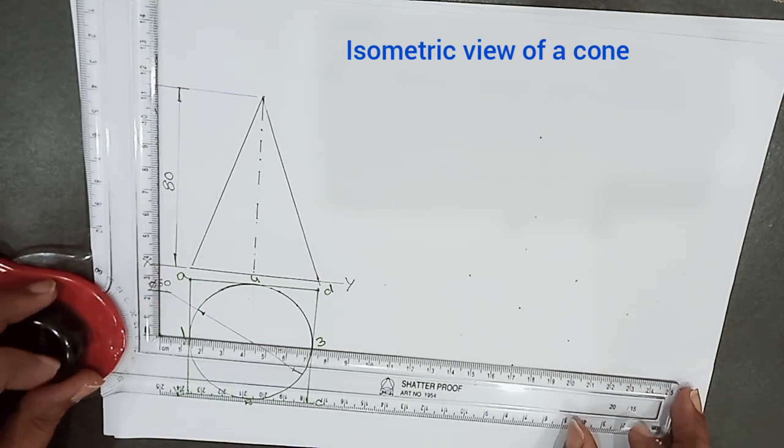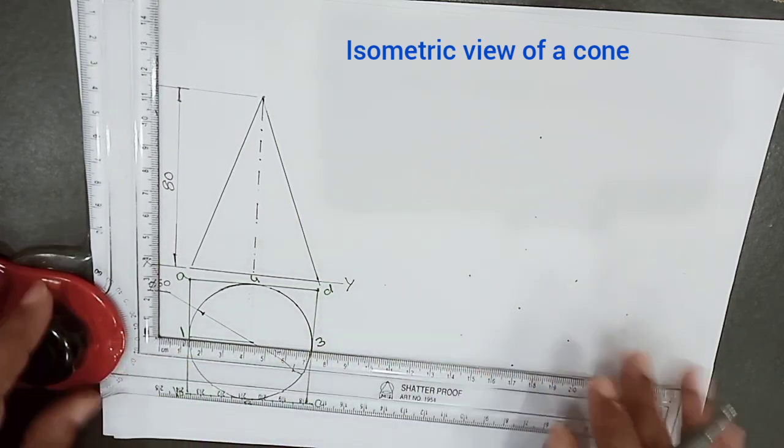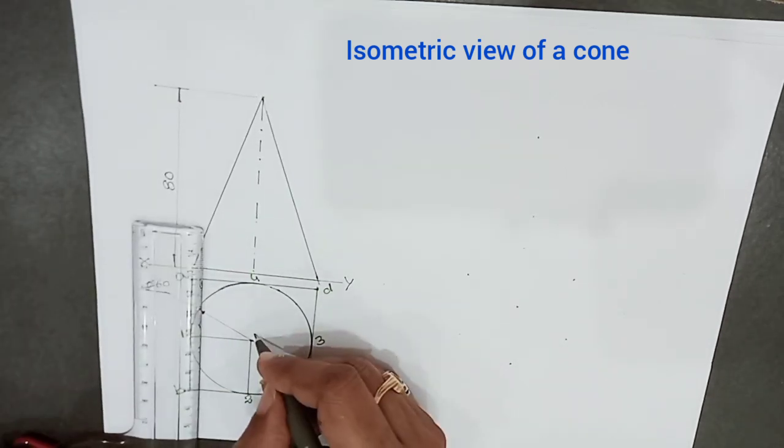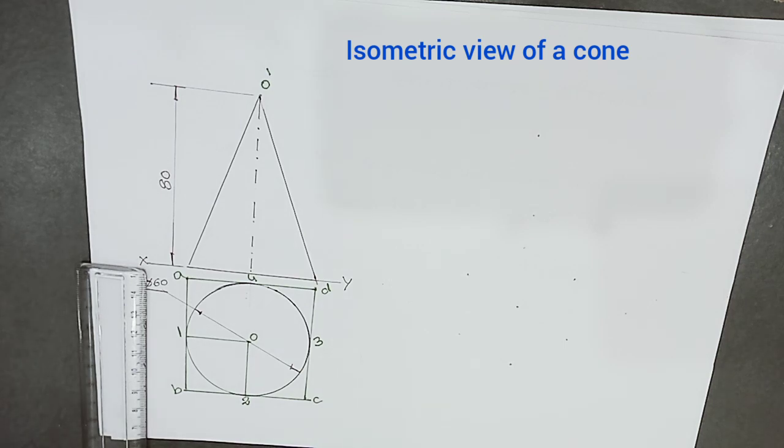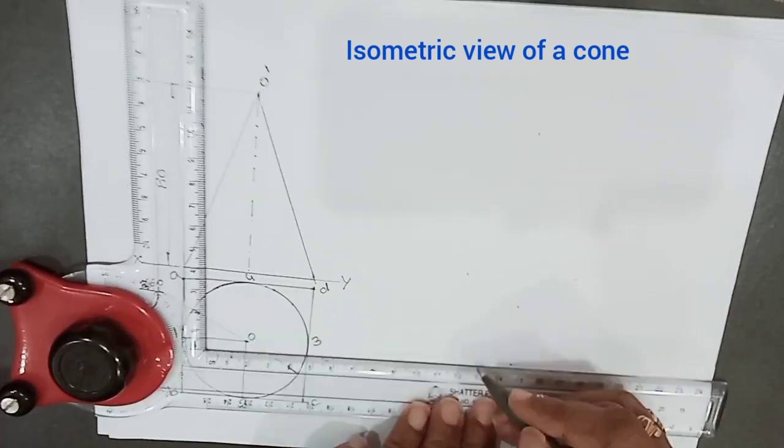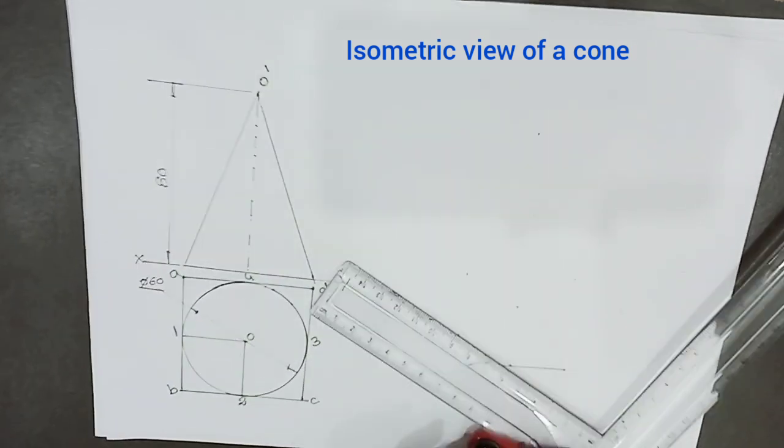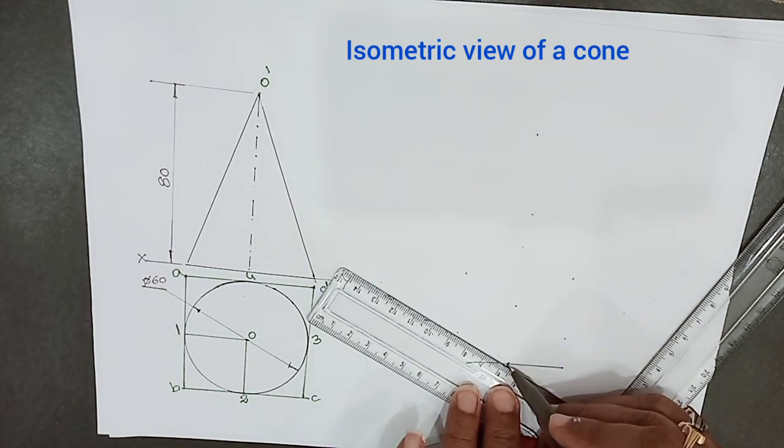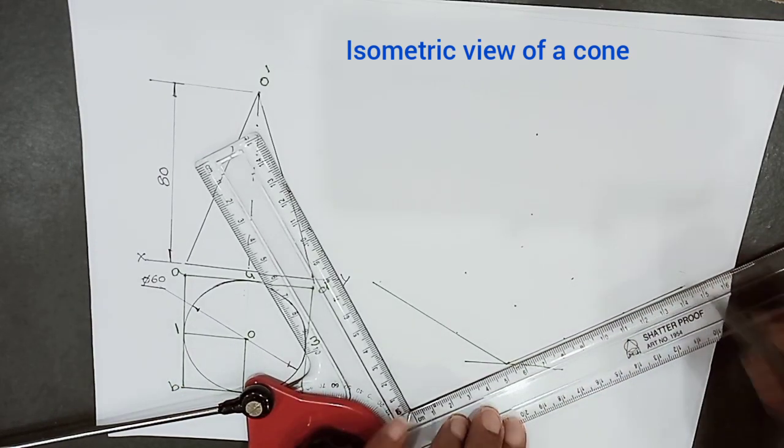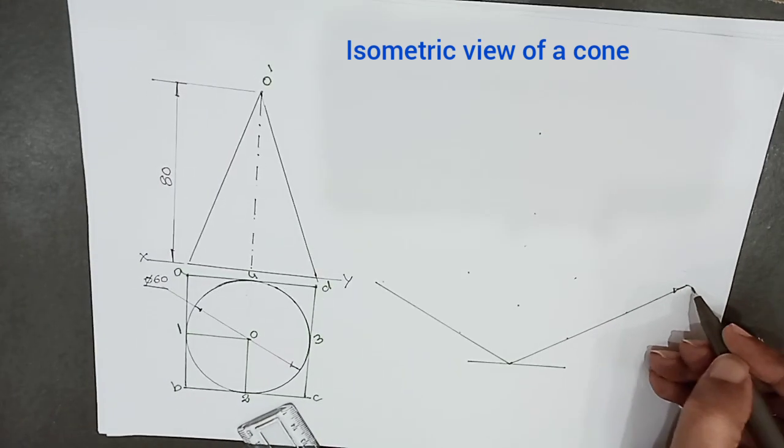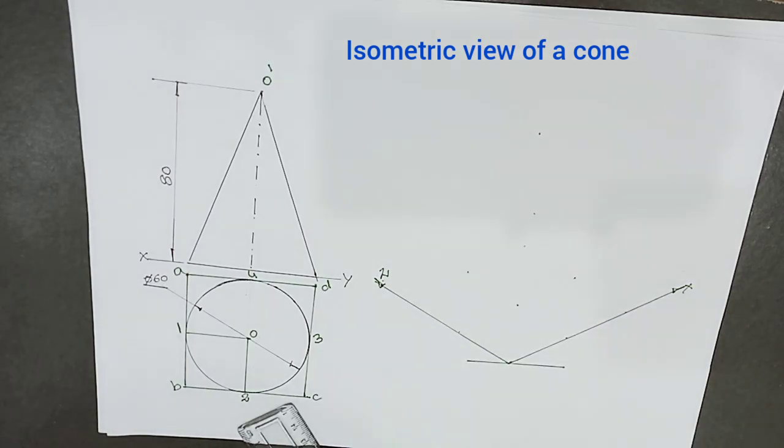After that, in order to locate the center O', we have to draw isometric view of the square first. As the base is on HP, all four sides of the square are making an angle 30 degrees to the ground line. First draw the ground line, then draw 30 degrees inclination left (Z axis) and 30 degrees inclination right (X axis). Top view is on XZ plane.